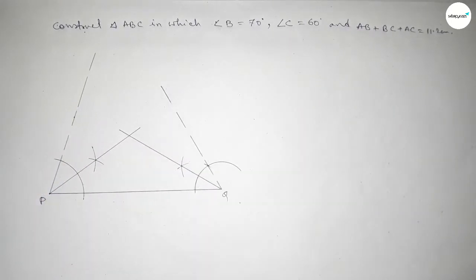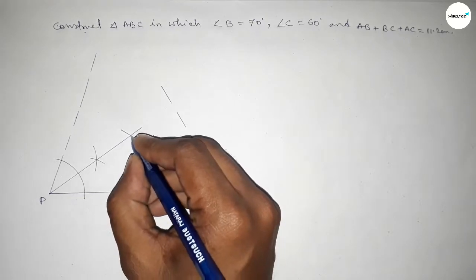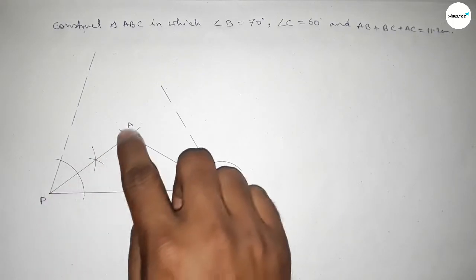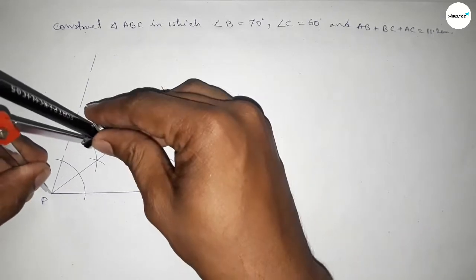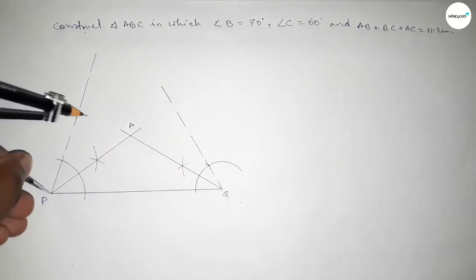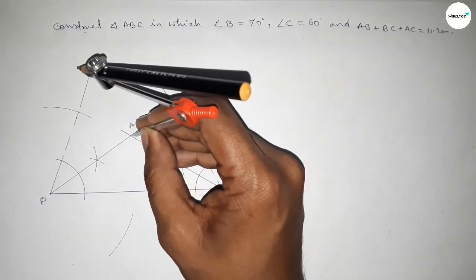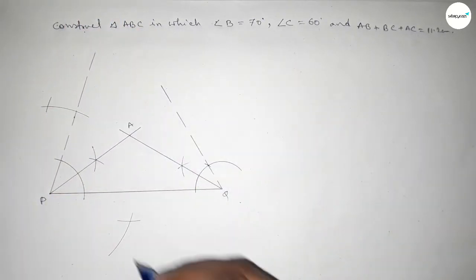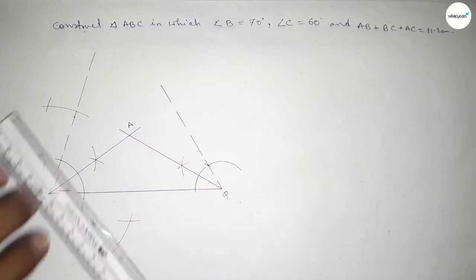Both the lines intersect at a point, so taking here point A. Now we have to bisect the line PA. Taking greater than half of PA and drawing an arc by this way. With the same length, putting the compass here and cutting here and cutting here, so both the curves intersect at two points.